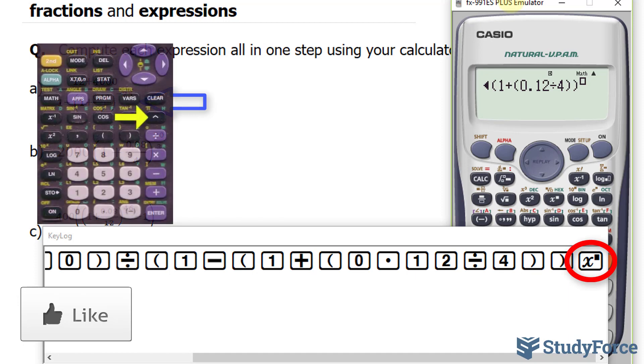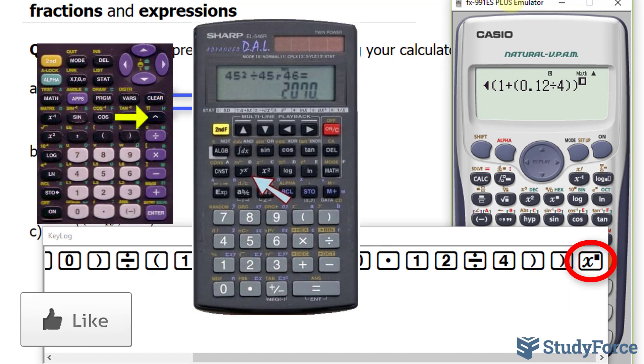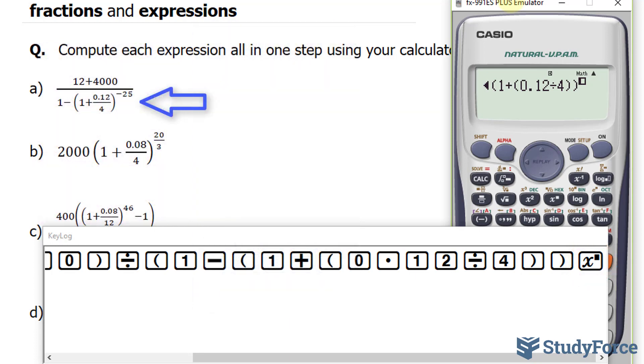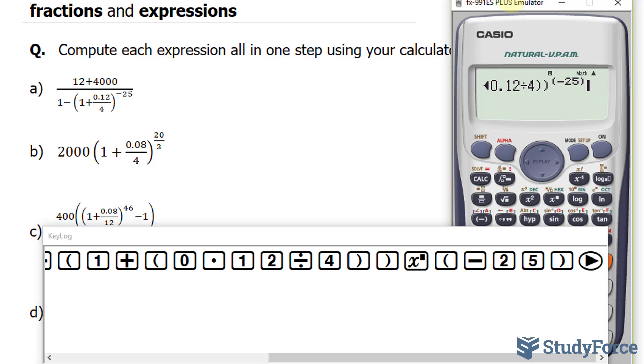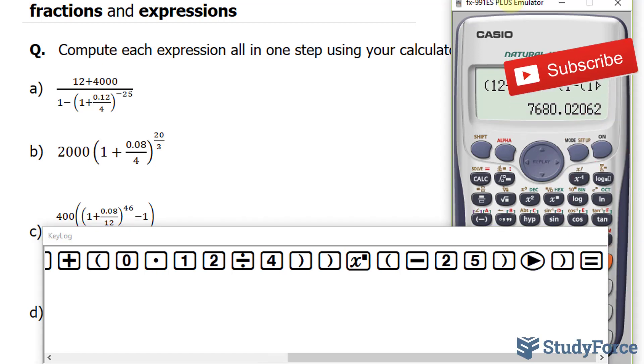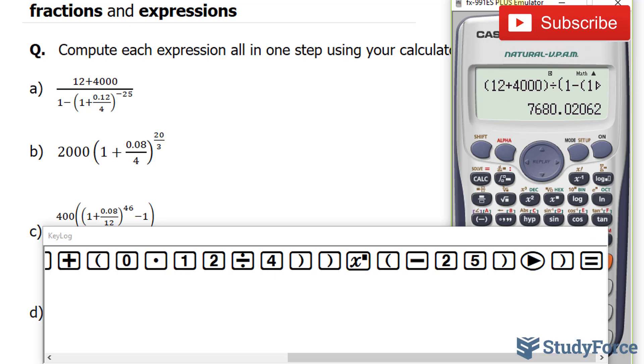Raise that to the power of negative 25. And depending on the calculator you're using, the symbol might be different. For example, you might see y to the power of x or x to the power of y. And place your power in parentheses as well. So I'll write down open, negative 25, close. And then close the whole denominator. We end up with 7,680.02.